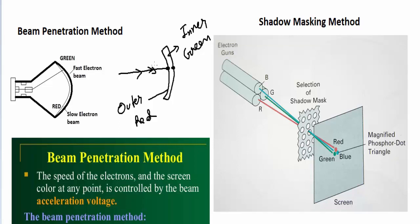Like yellow and orange - this is how the beam penetration method works. Fast electron beam will generate green, and slow will generate red, and a combination of them will generate different colors.